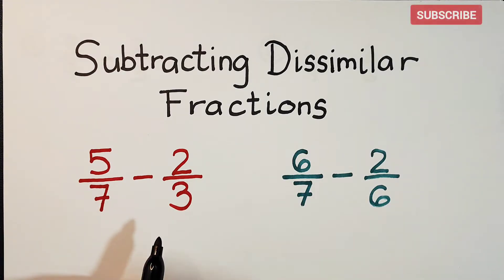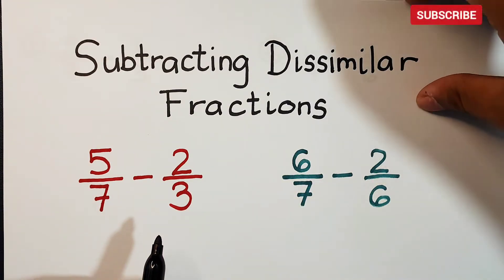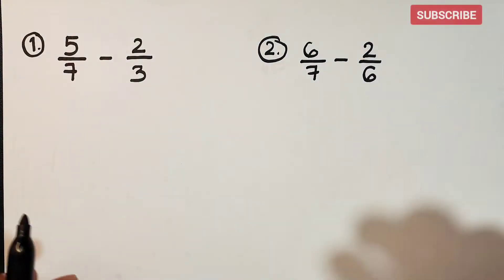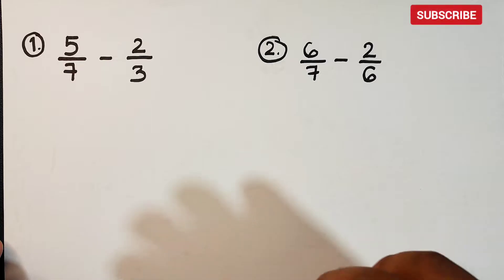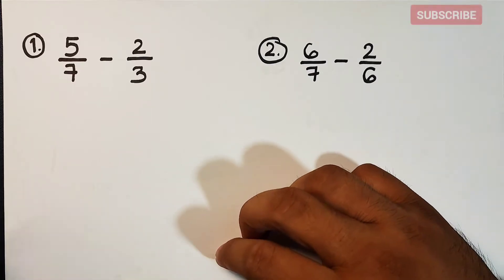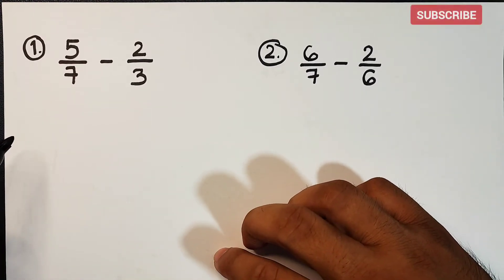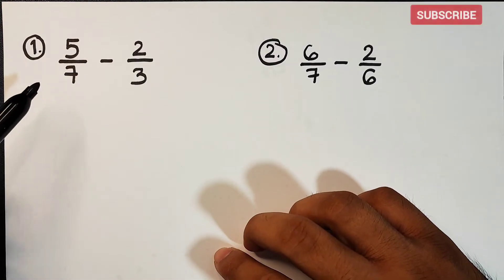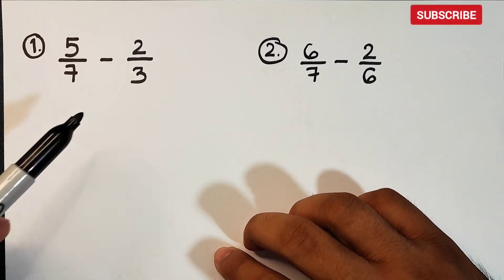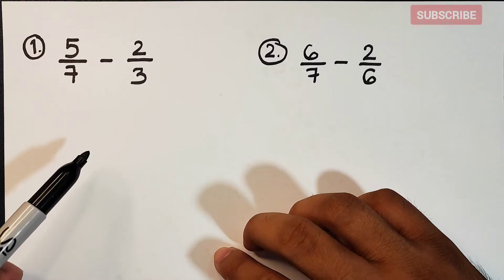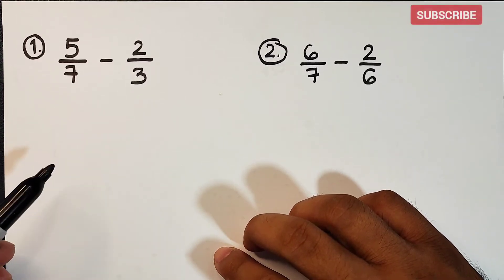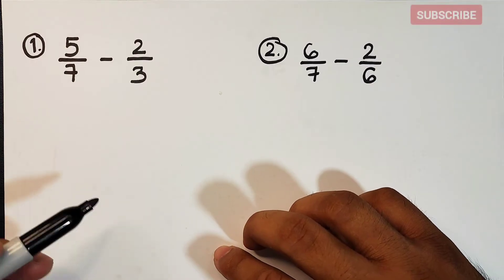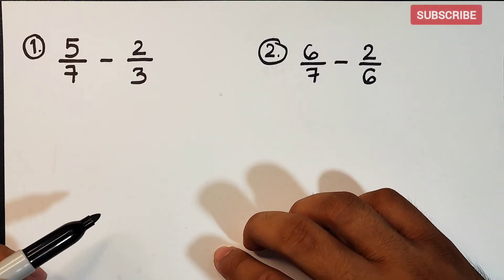Without further ado, let's do this topic. What we have here are the first two examples for subtracting dissimilar fractions. We will do the classical way on how to subtract these fractions. Again, they are dissimilar fractions — they have different denominators. So the first thing we need to do is identify their LCD, or the Least Common Denominator.